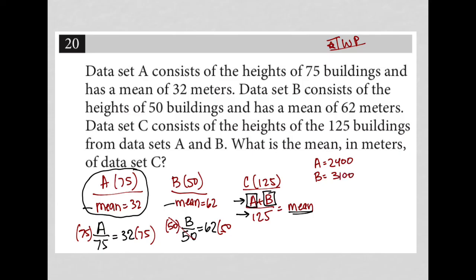So for C, I'm just going to add A plus B. So 2,400 plus 3,100, all divided by 125 should give me the mean for data set C. So adding all this together, 2,400 plus 3,100 equals 5,500, divided by 125 equals 44.